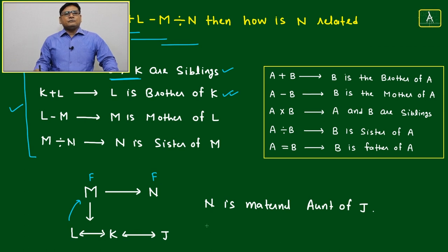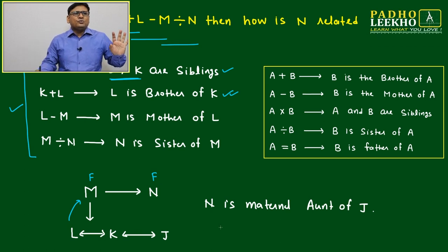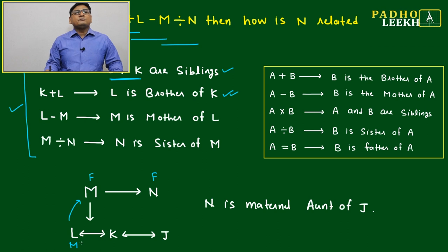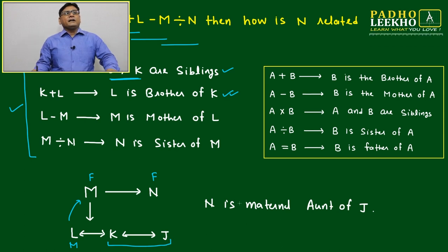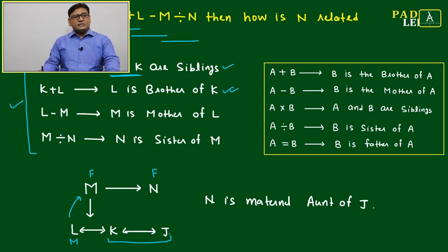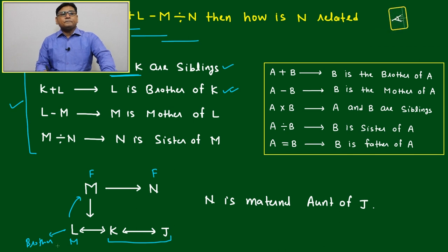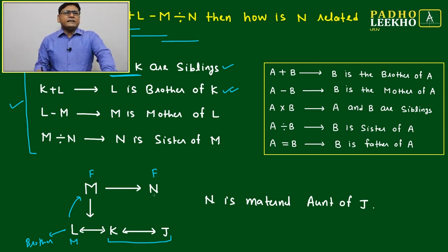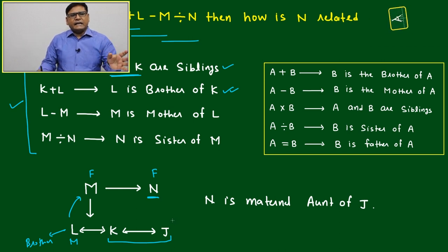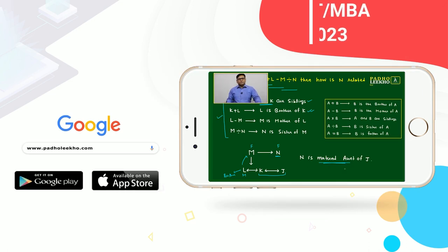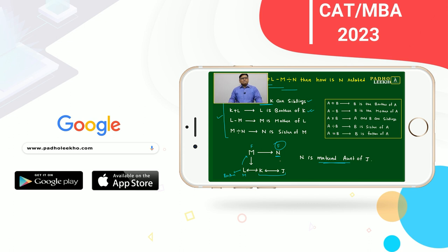N is feminine and M is also feminine. Regarding L, K, and J — L is brother of K, so L is masculine. But J and K's gender we don't know — they could both be feminine, both masculine, or one of each. The question asks how N is related to J. Since the relation of N to J, K, or L will be the same, N is the maternal aunt of J. N is feminine — if N were the brother of M, it would be maternal uncle instead.